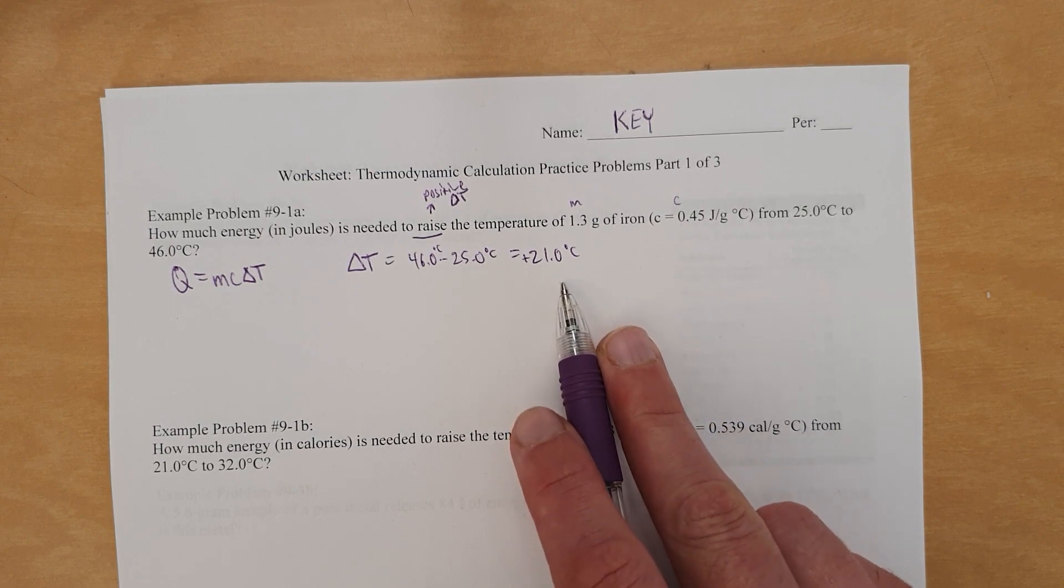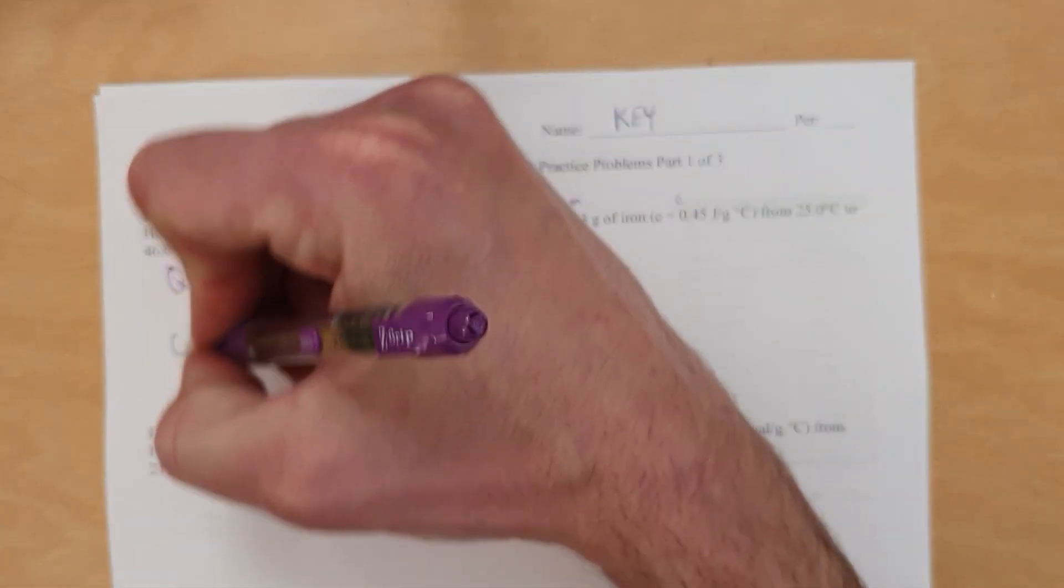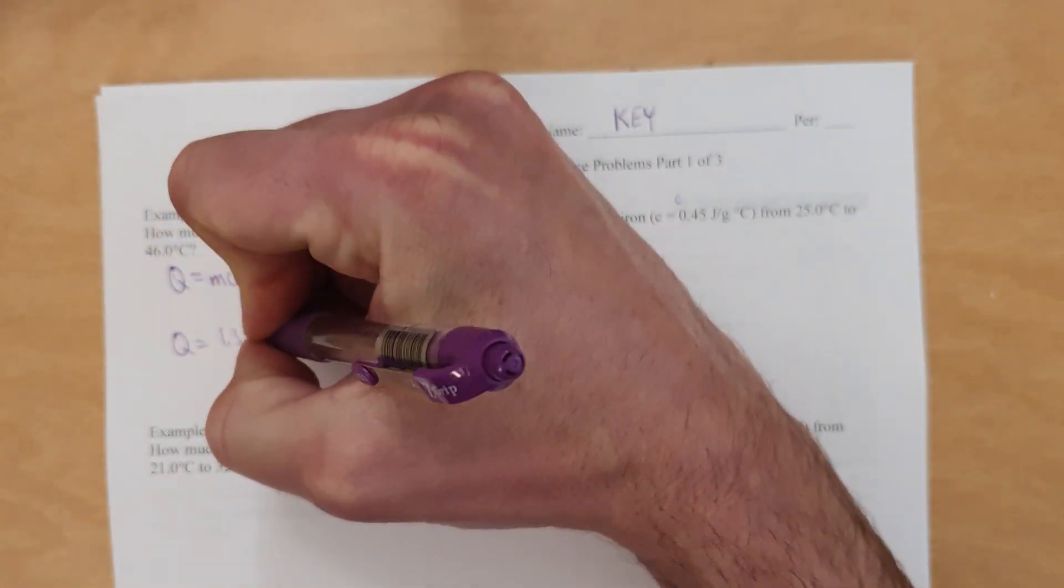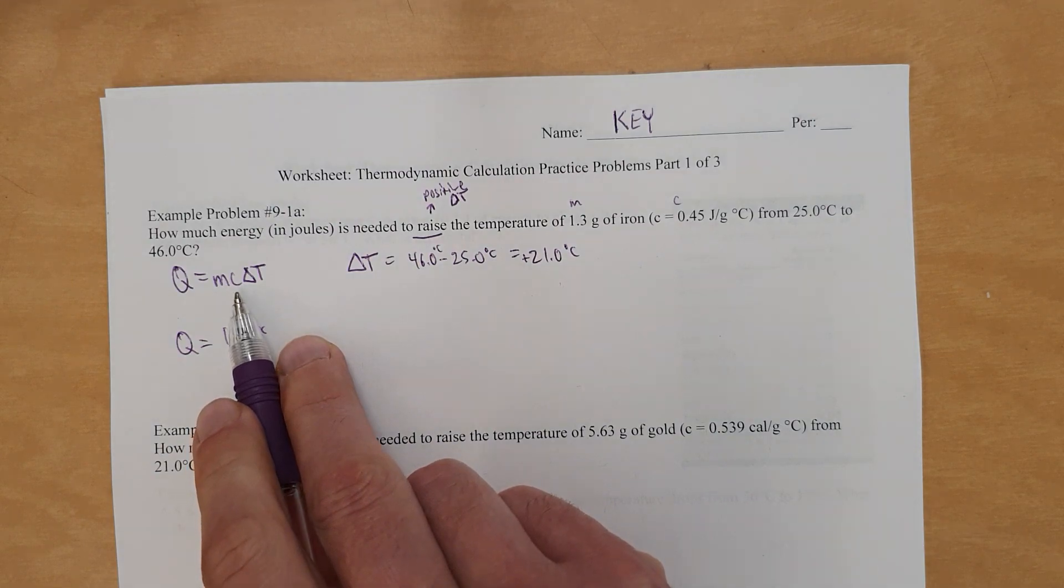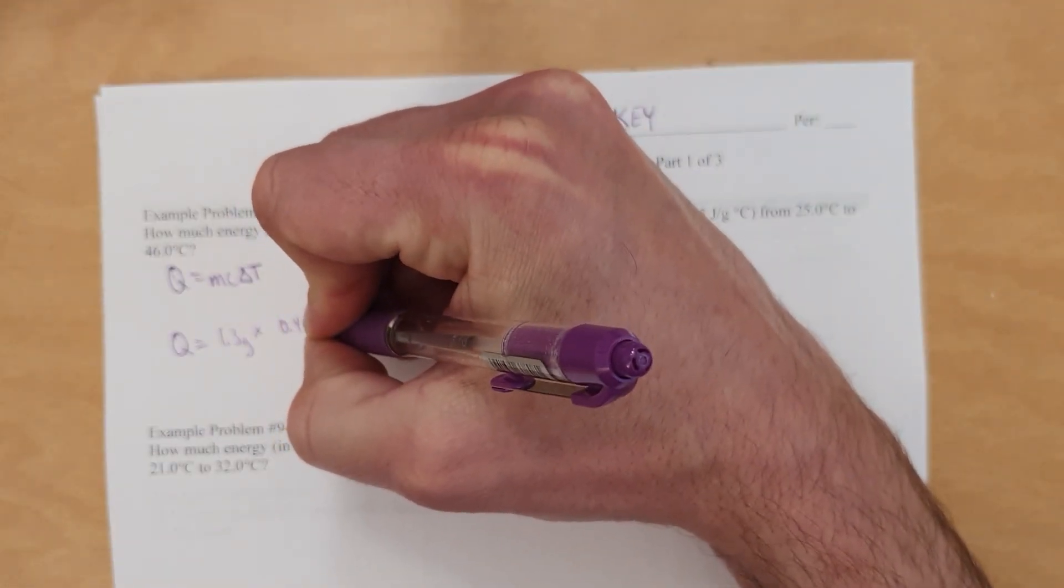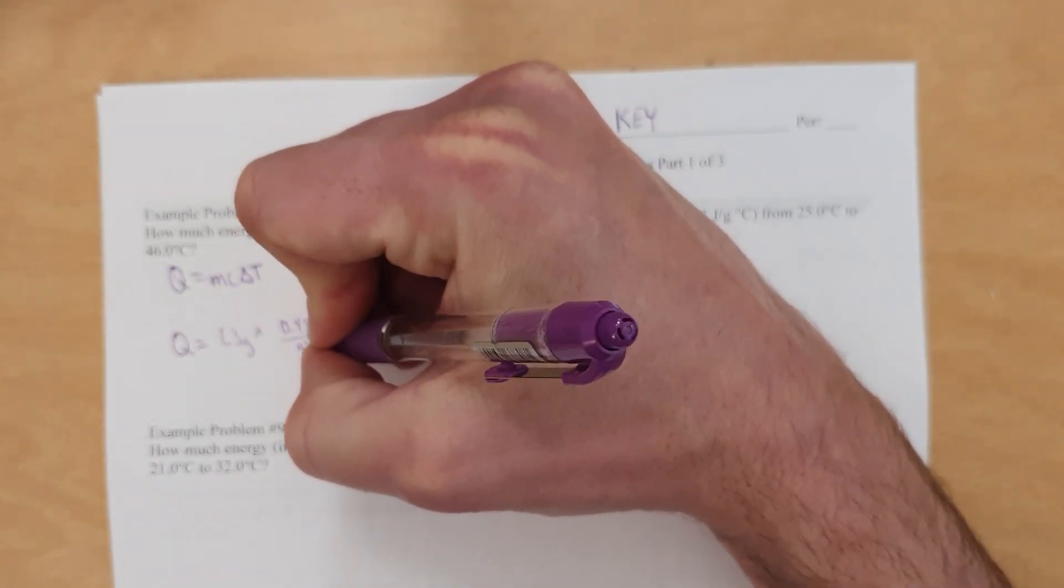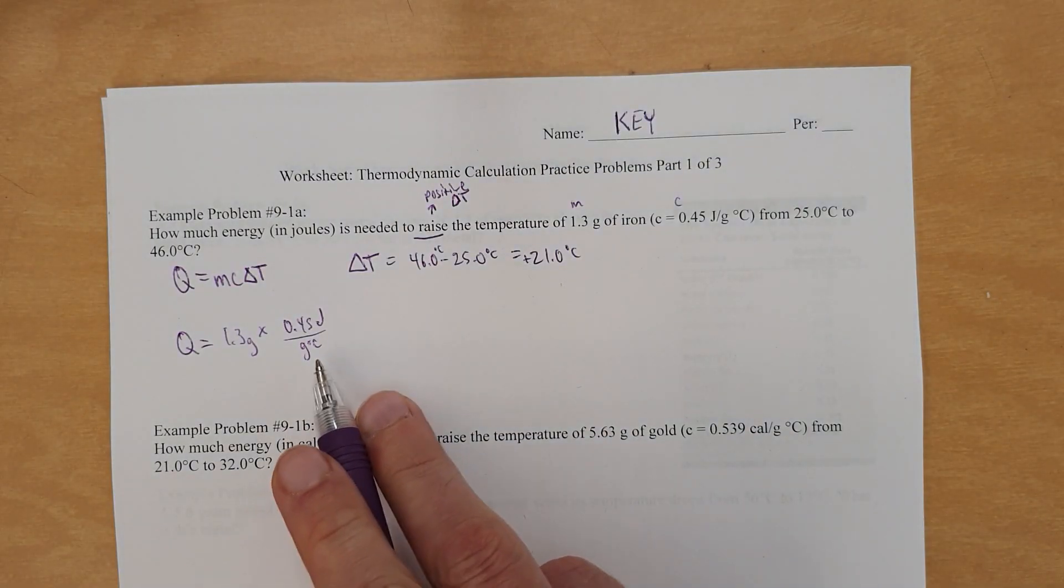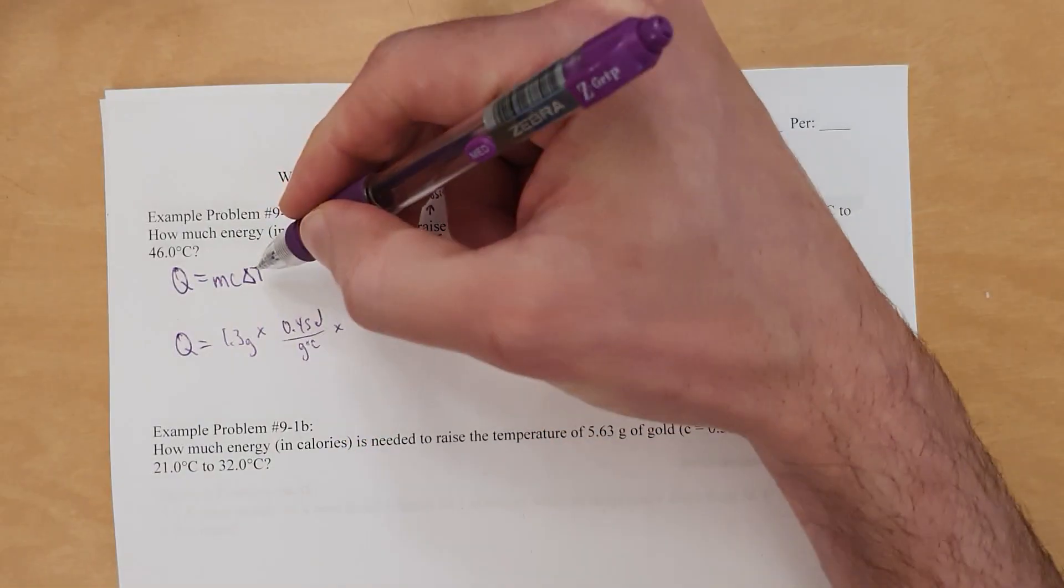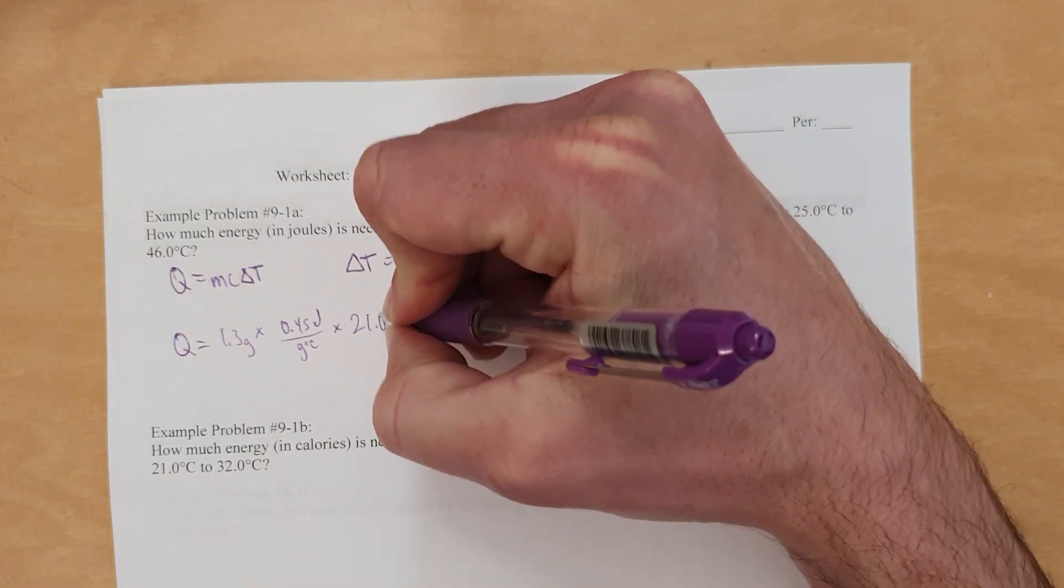Now, once that is done, you can plug in the numbers to solve. So Q equals our mass right there, 1.3 grams times specific heat capacity, 0.45 joules per gram degree Celsius. Always show units on your work as well as the numbers. And then we're going to times it by the delta T, which is 21 degrees Celsius. So 21.0 degrees Celsius.